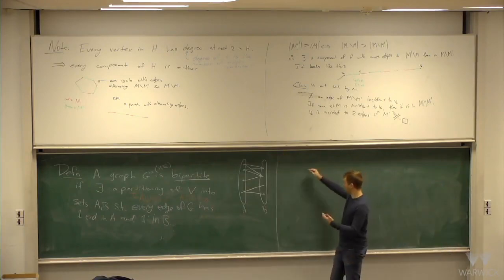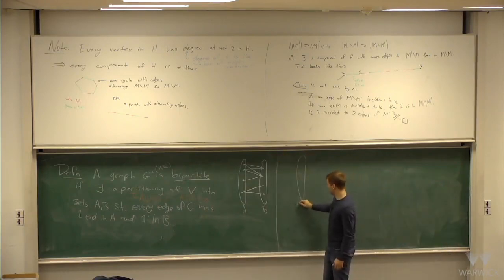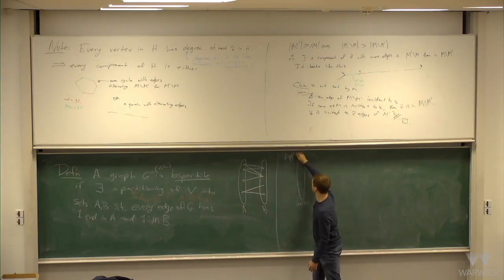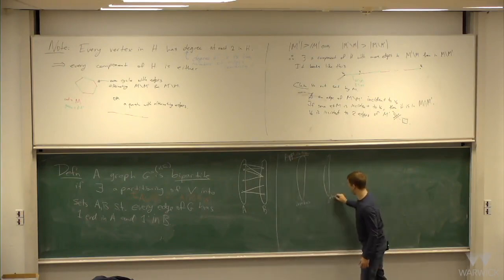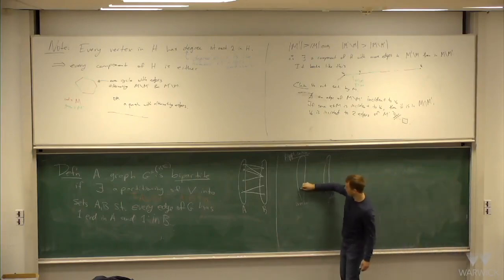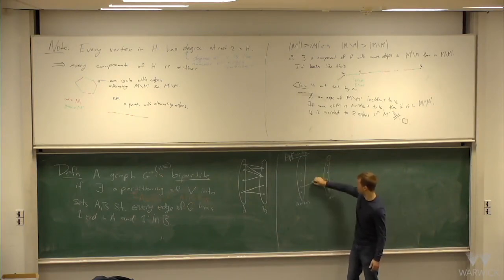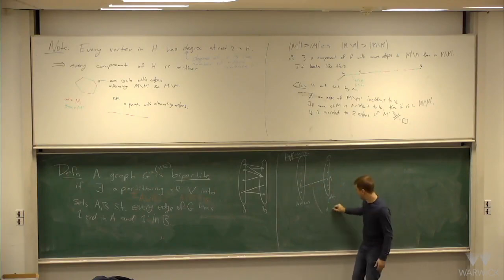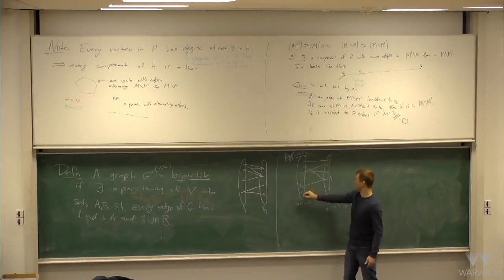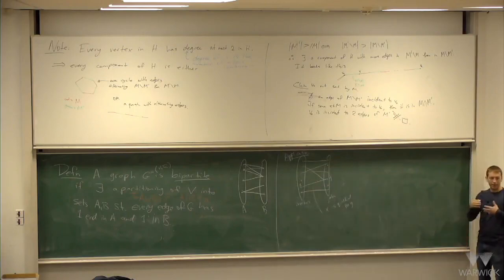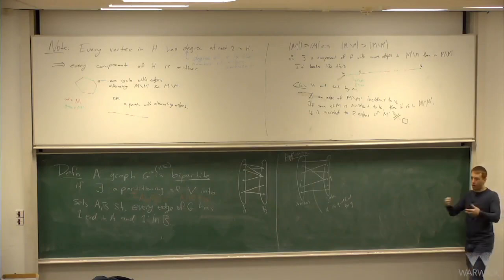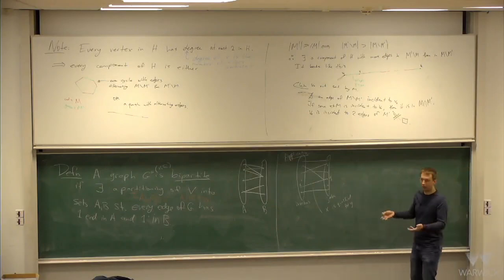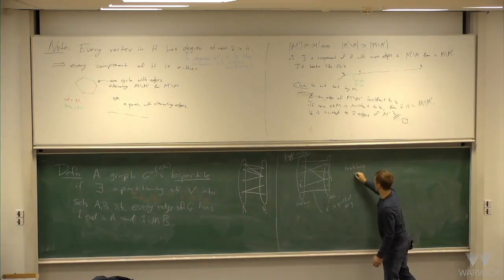Why would we care about matching in bipartite graphs? There are a lot of natural real-world problems phrased as matching in bipartite graphs. For example, suppose you have workers and jobs. Represent each worker by a vertex on one side, each job by a vertex on the other side. Join a worker to a job if that worker is qualified for that job. A matching in this graph gives a way of assigning workers to jobs where everybody's qualified for their assigned job. So matching is a job assignment.